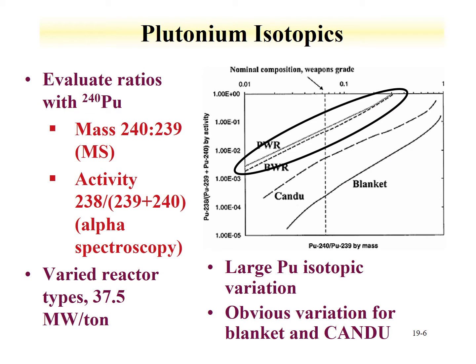What is very evident is the differences between the light water reactor types and the heavy water reactor type, and the differences further still between the reactor types and a blanket. By looking at these activity and mass ratios for the plutonium isotopes, one can get an idea of the reactor that was used to produce the plutonium.